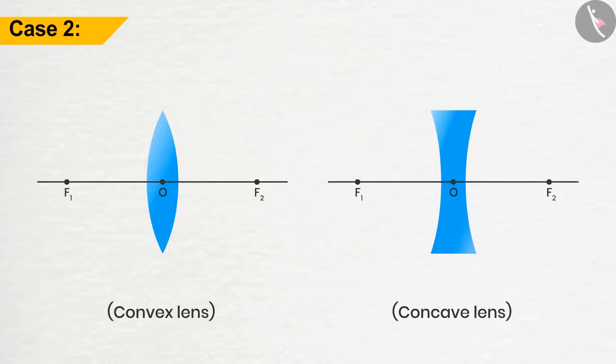In case 2, if the ray of light passes through the focus of the convex lens or appears to go towards the focus of the concave lens, then after refraction, it will emerge parallel to the principal axis.